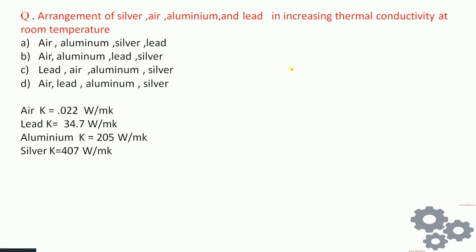Arrange silver, air, aluminium, and lead in increasing order of thermal conductivity at room temperature. To answer this we need the thermal conductivity values for each material. In increasing order the arrangement is: air, lead, aluminium, silver. The last option is the correct answer.